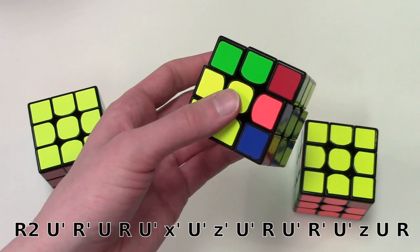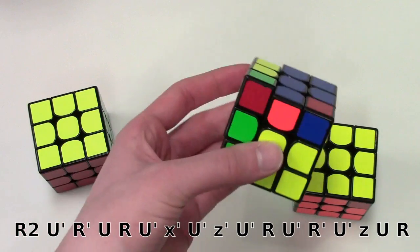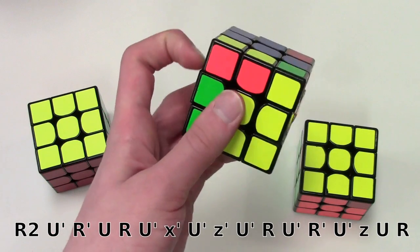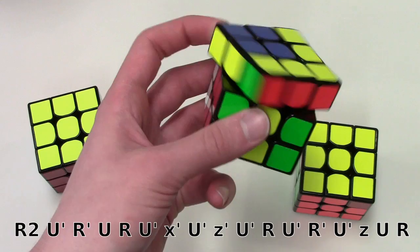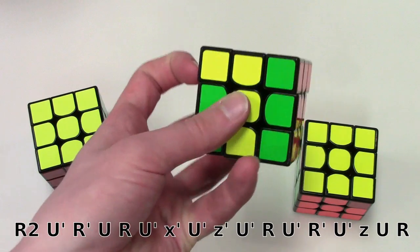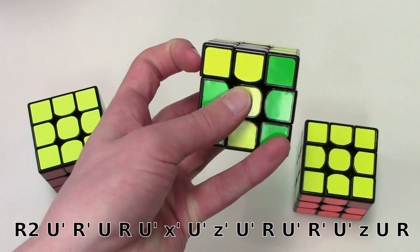Now I do U'. Now I'm going to have to rotate again, do a Z rotation. Do another U'. Now R like this, U', and as you can see my pinky is ready to do the R' again.